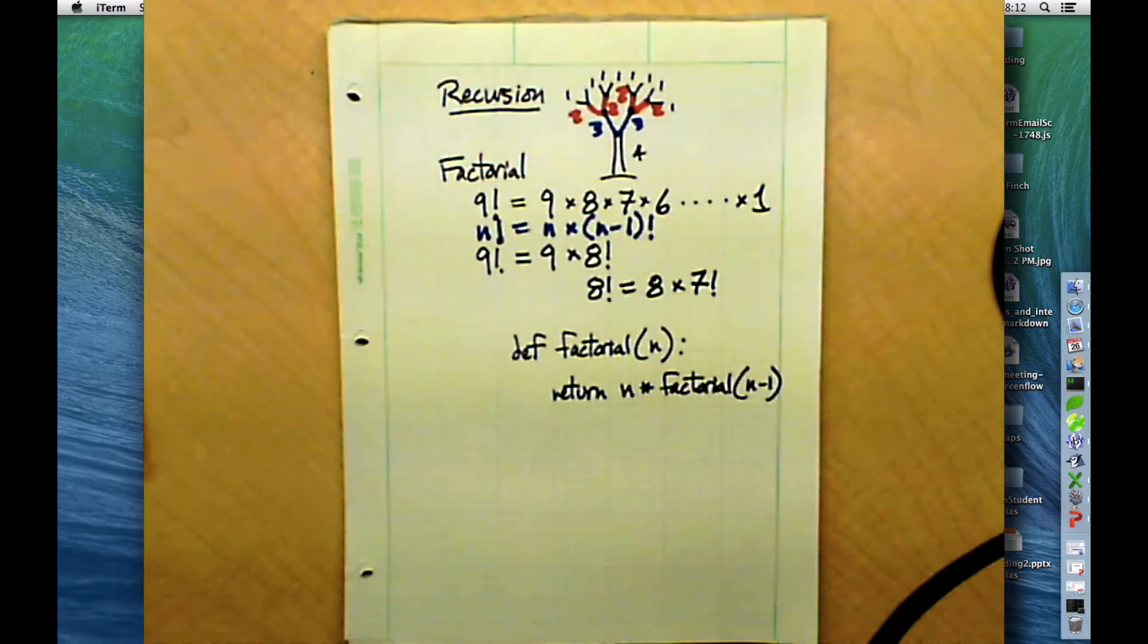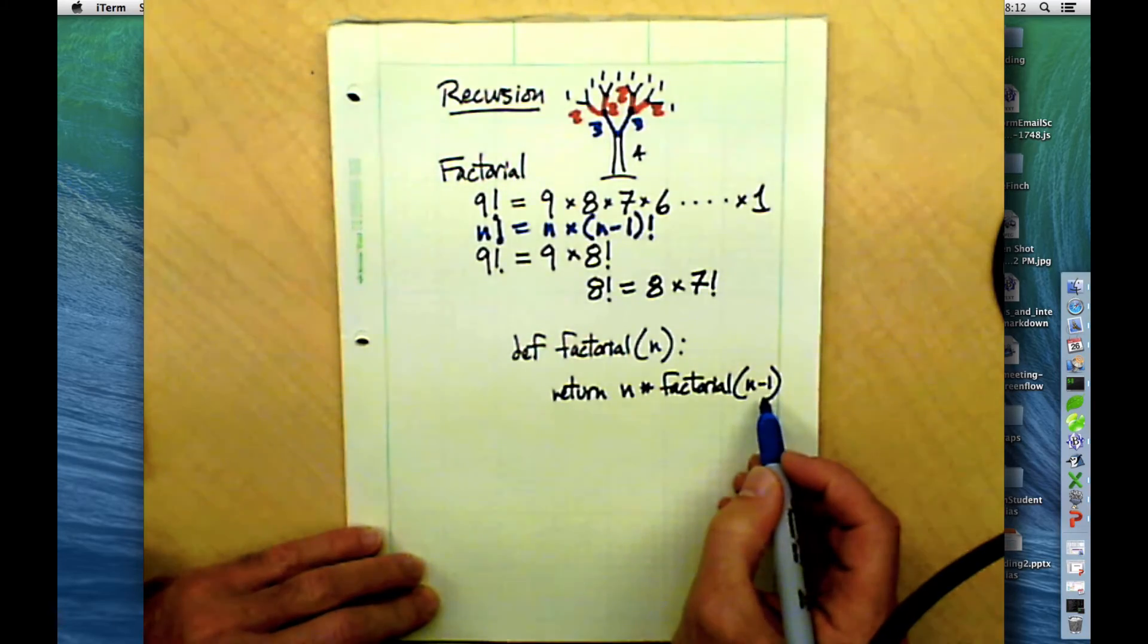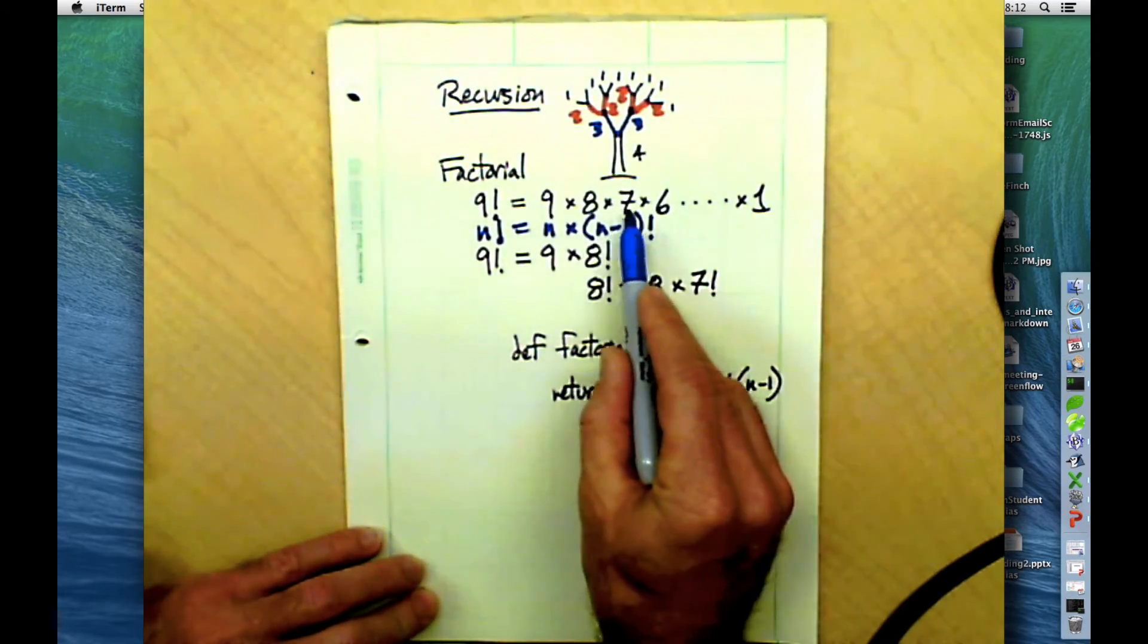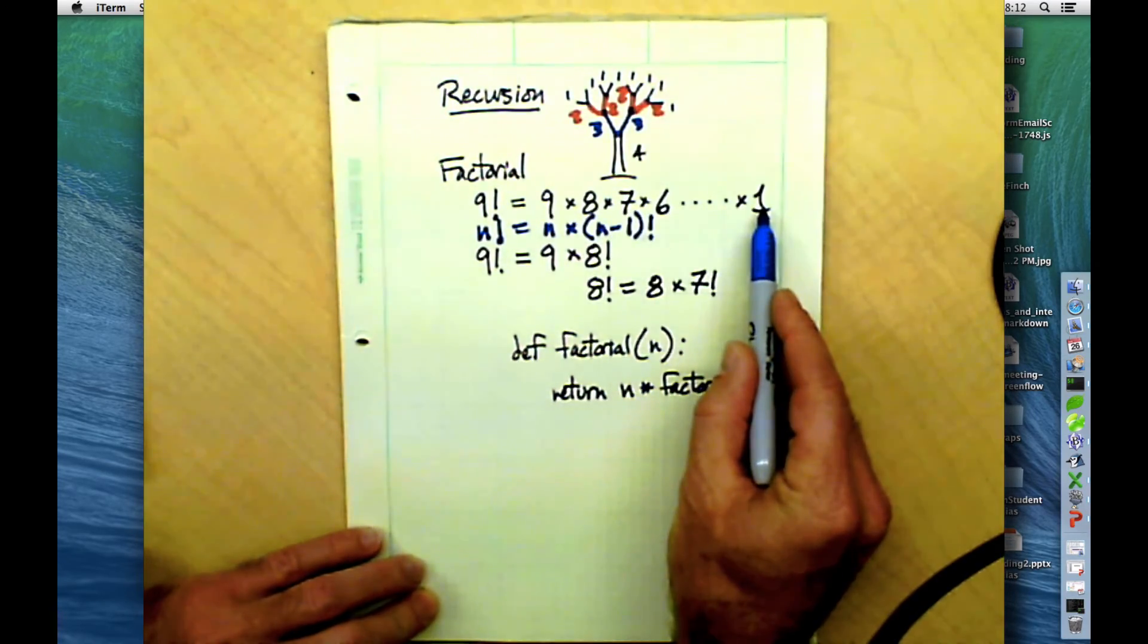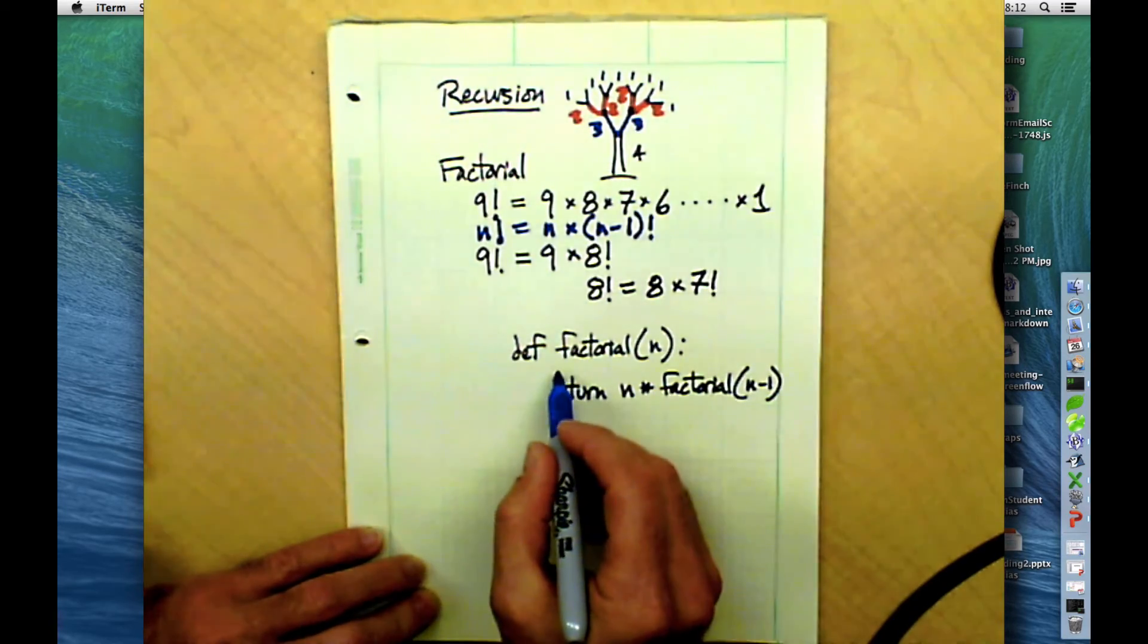So when we do a factorial program, what we need to do is make sure that we allow for not continuing to calculate the factorial forever. And how do we know when we should stop? What's the last number that we want to be able to calculate before we stop? We want to go all the way down to one.